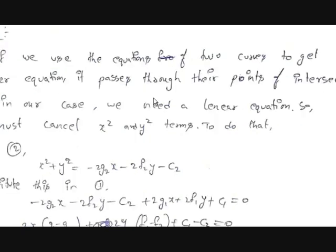Now let's continue by proving this in a logical way. If we use the equations of two curves to get another equation, that new equation passes through their points of intersection. This is the same approach used when solving two straight lines — you subtract them to get another equation from which you find x and y values. It means that if we combine two or more equations to form another equation, the resultant equation passes through their points of intersection. Since a chord is a straight line, it must be a linear equation in x and y, so there must be no x² or y² terms — we need to cancel those.